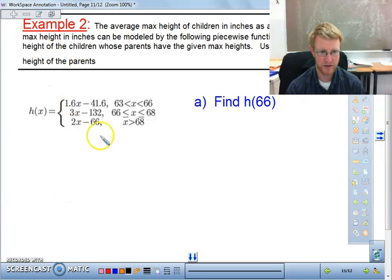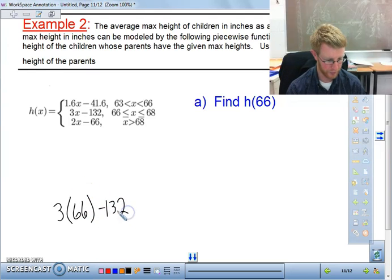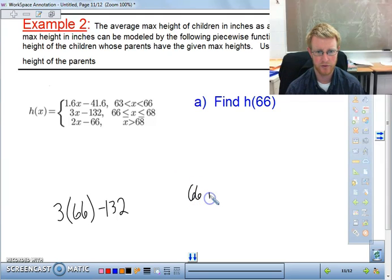We have to use the second equation, which means we're going to go 3 times, our input value is 66, minus 132, and that gives us 66 average inches, or average height.